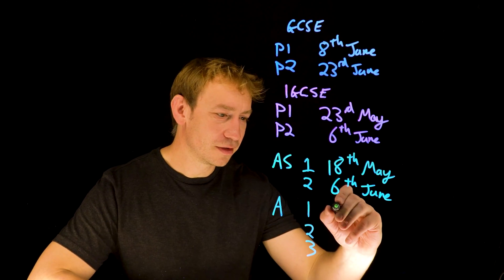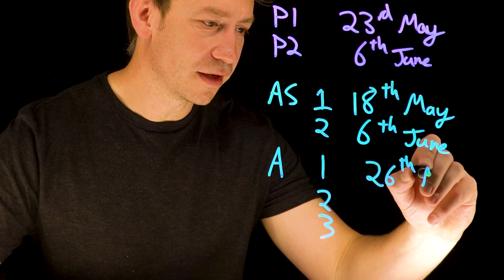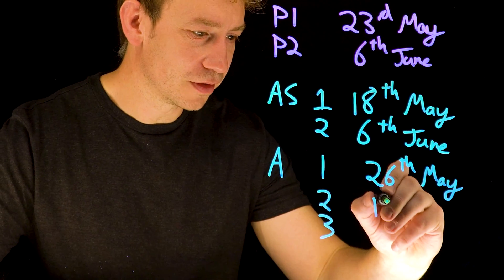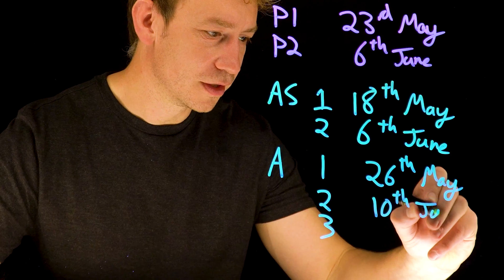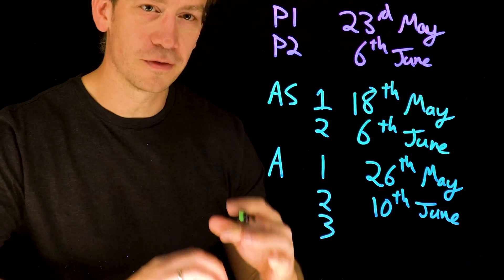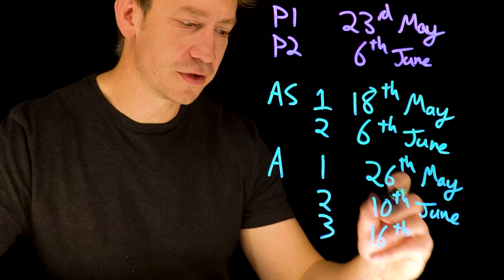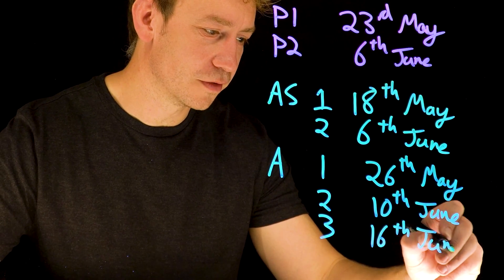Paper one for A level starts on the 26th of May. Paper two is on the 10th of June, and then that's followed by paper three, often the practical paper or one of the options, on the 16th of June.